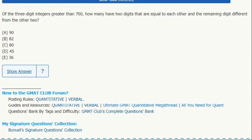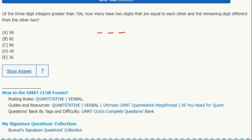So this is a seemingly difficult combinatorics problem, the permutations where we have three digit numbers greater than 700, two digits are equal to each other and the remaining digits are different from the other two.